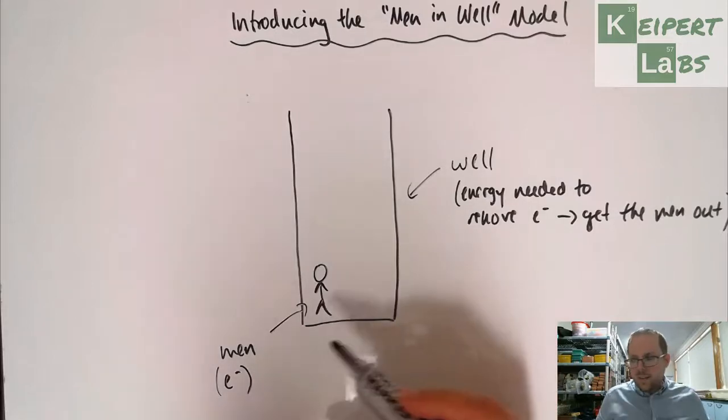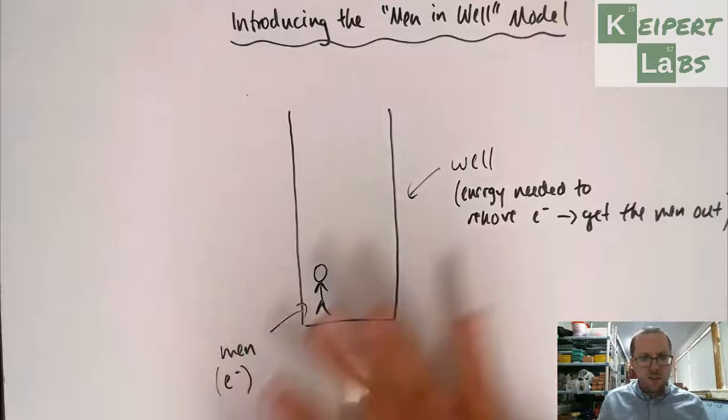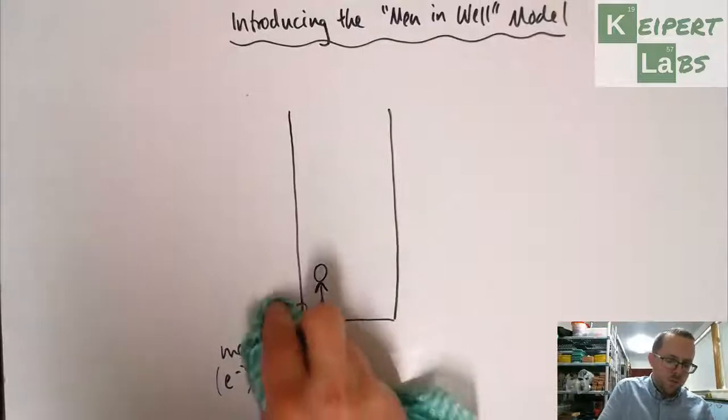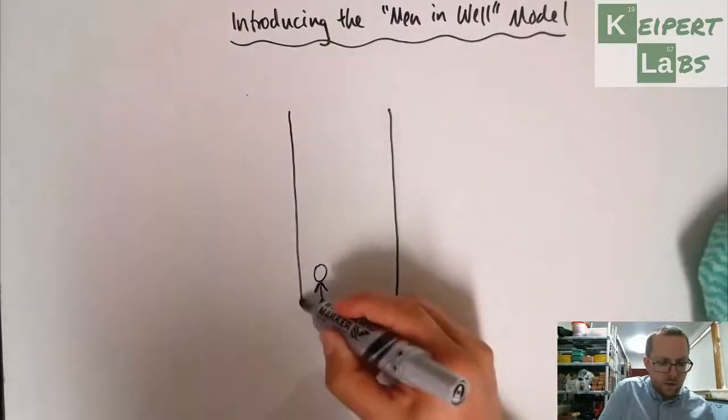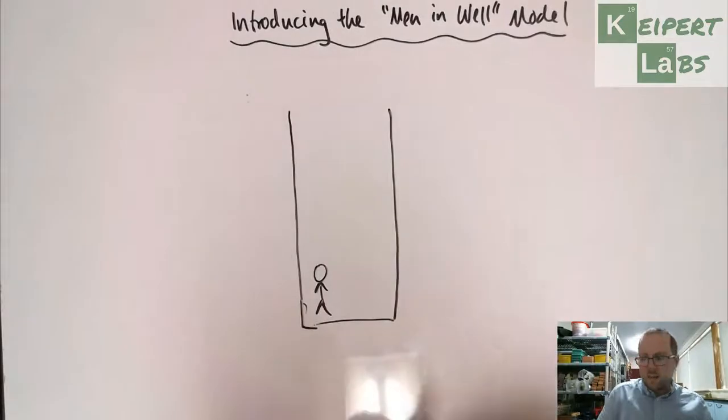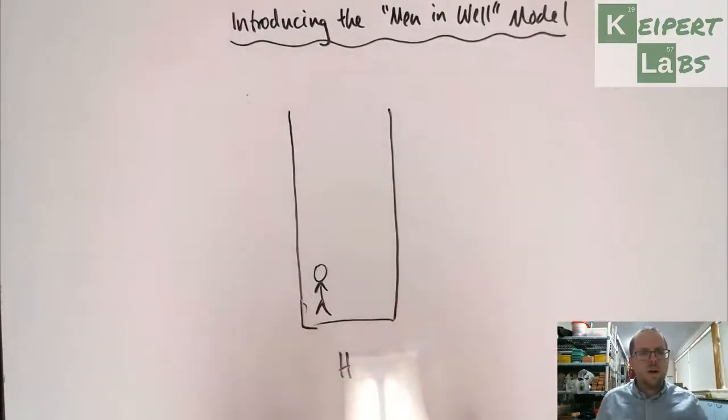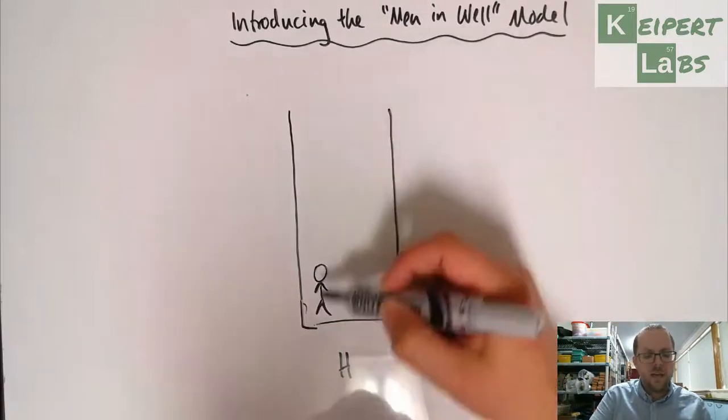We're going to draw five diagrams as we go. This is just giving you the idea. So let this first diagram, let me just tidy up the well here a little bit. Let this represent hydrogen. Hydrogen has one electron, so it's one man stuck down a well and there's a certain amount of energy involved in getting him out.